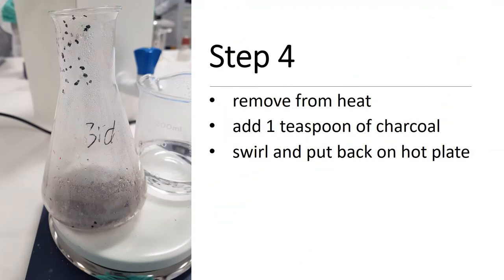Step 4. Once the impure benzoic acid is reasonably dissolved, remove the conical flask from the hot plate. Then add 1 teaspoon of decolorizing charcoal to the dissolved benzoic acid. Put the conical flask back on the hot plate, swirling periodically.